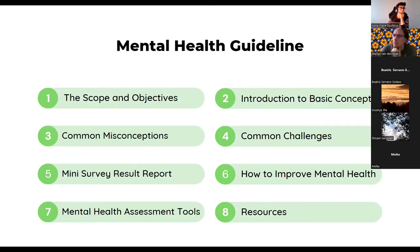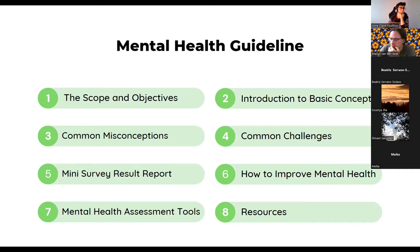The mental health guideline is a work in progress and will be published soon. Its general contents include the scope and objective of the project, basic concepts, and common misconceptions about mental health. It also includes survey results and how we can overall improve mental health in open source communities, along with mental health tools suggested to the community and resources — such as links to communities or professional health services.